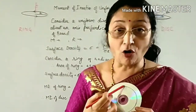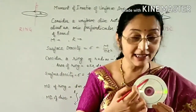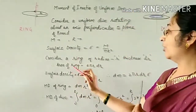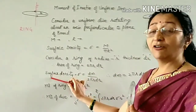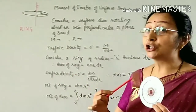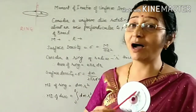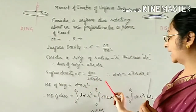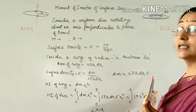The area of this ring is the circumference 2πr multiplied by the small thickness dr, so the area = 2π·r·dr. The surface density for that ring gives us: σ = dm / (2π·r·dr), and therefore dm = 2π·r·dr·σ, where dm is the mass of that thin ring.